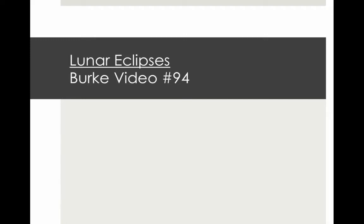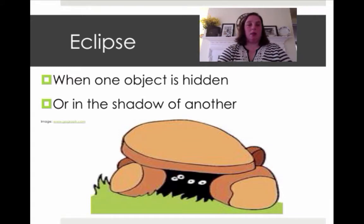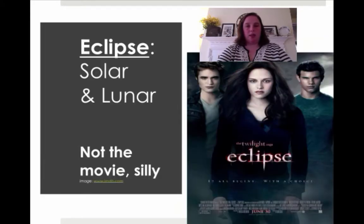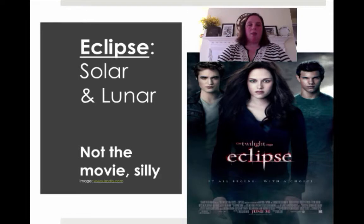Welcome to video number 94. This one's going to be about lunar eclipses. Eclipses just means when one object is hidden or in the shadow of another. My cat likes to hide between things, so he likes to eclipse from time to time. Eclipses come in solar and lunar, although I am a wicked Twilighter and very much enjoyed the movie. This time we're talking about astronomy.